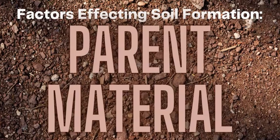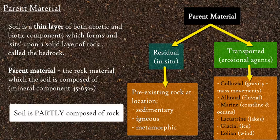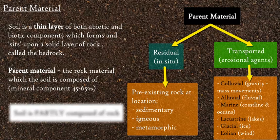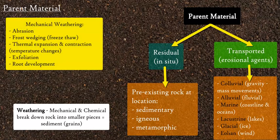Parent material controls soil formation. Soil sits on and is partly composed of mineral particles which come from rock, so we must discuss the bedrock — the parent material and where it came from. The parent material is the igneous, sedimentary, or metamorphic rock just below the soil from which the soil initially forms. This is closely linked to climate and how weathering breaks down rock through various agents and time, generating smaller particles around which soil can form.